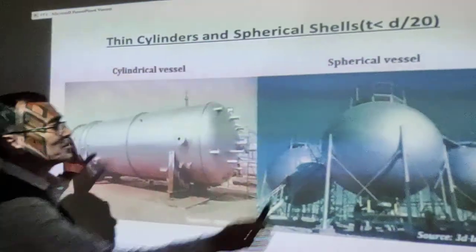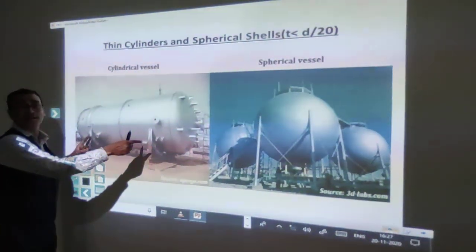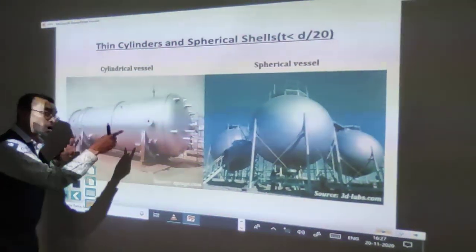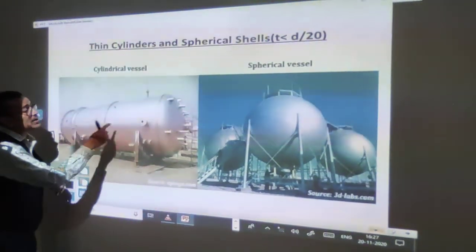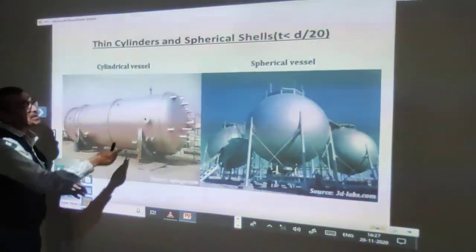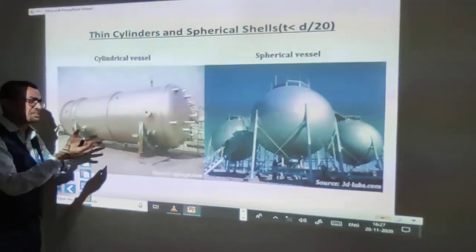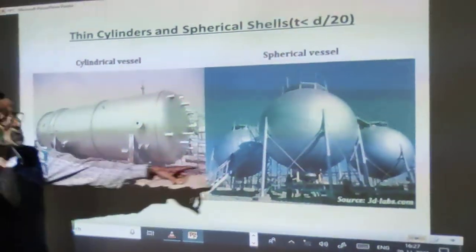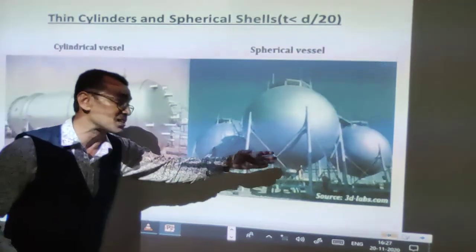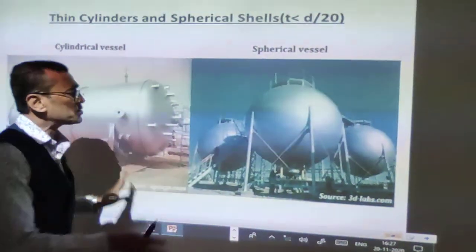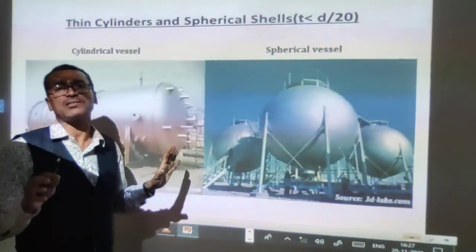This is a clear picture — this is a huge vessel, also called a cylinder, which is used for storage of chemicals like petroleum products, gasoline, diesel, and petrol. This is also a spherical vessel. These are thin cylinders or thick cylinders — these are the devices used for the storage of large quantities of fluids.